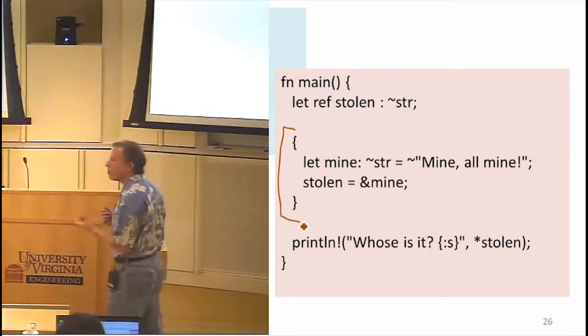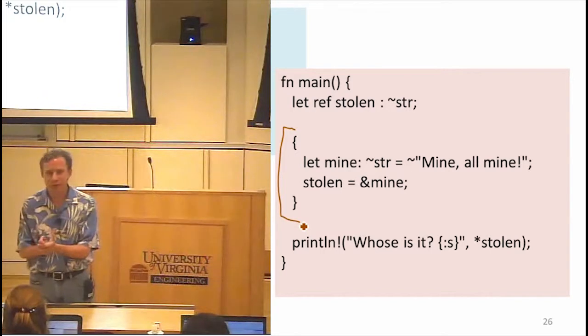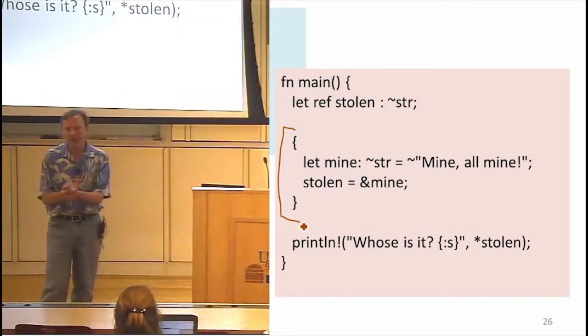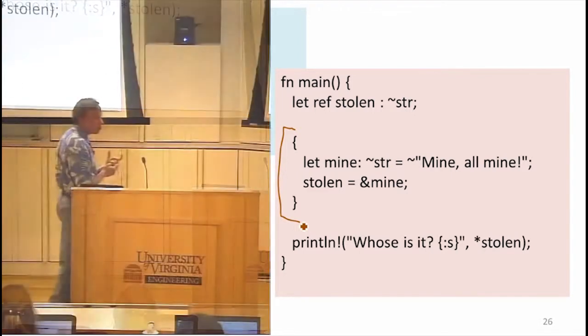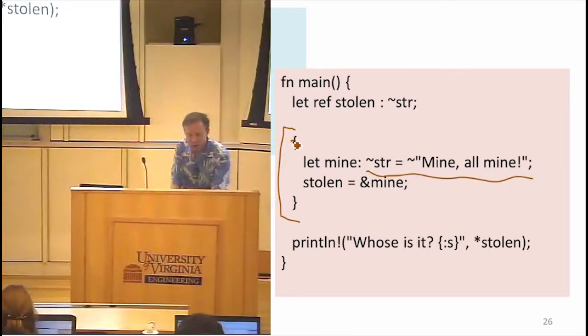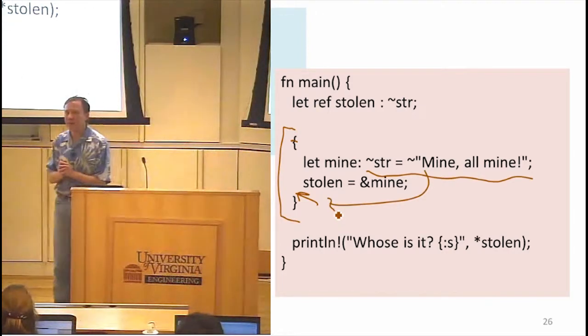So when we borrow things, we borrow them for a limited amount of time. You can think of this sort of like borrowing objects in the real world. If the thing that you're borrowing had a lifetime that's limited, you can't borrow it beyond the end of that lifetime. The problem with this code is this object, right? This is an owned pointer here. It's created within the scope. When we're done with the scope, that object that was created here, that's done. It's lifetime is over.